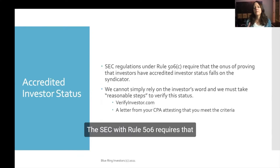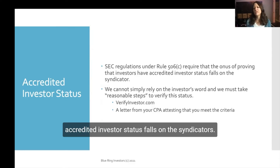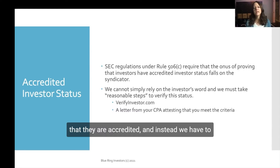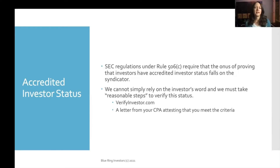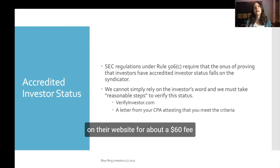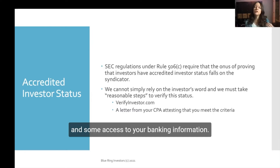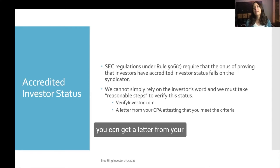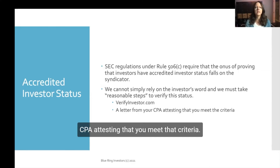The SEC with Rule 506c requires that the onus of proving accredited investor status falls on the syndicators. We can't simply rely on the investor's word and instead must take reasonable steps to verify it. There are two easy ways to do that: one is through a third party like verifyinvestor.com — for about a $60 fee and some access to your banking information they will confirm your accredited status. Or you can get a letter from your CPA attesting that you meet that criteria.